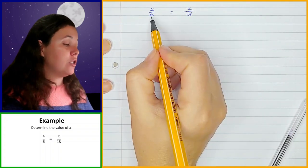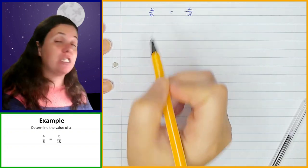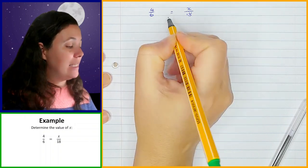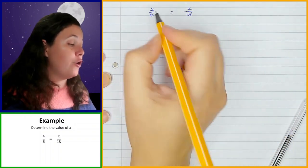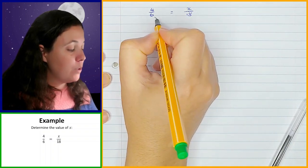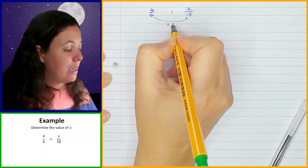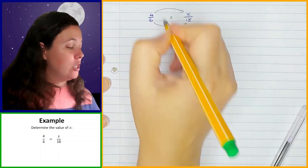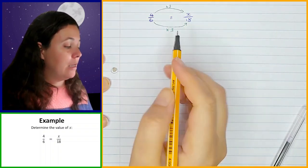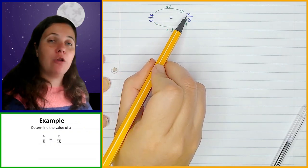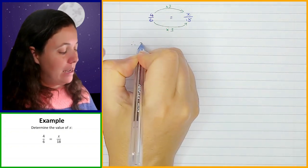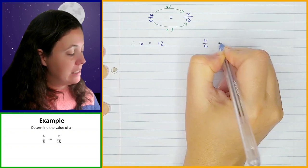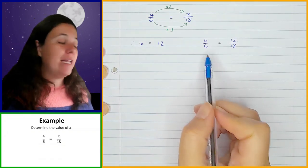Whatever I do to the denominator, I must do the same thing to the numerator to keep it equal. Looking at the denominator: from 6 to 18, I need to multiply by 3. For equivalent fractions I must also multiply the numerator by 3, which means 4 times 3 gives the value of x, which is 12. Therefore x is 12, and 4 over 6 is equal to 12 over 18 — those are equivalent to each other.